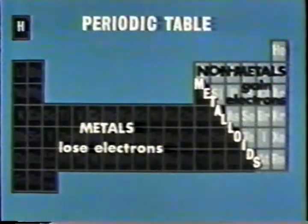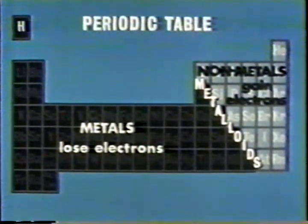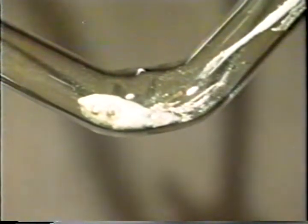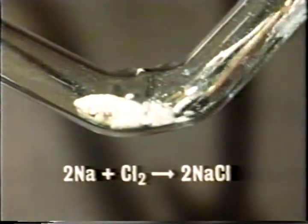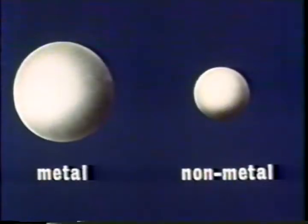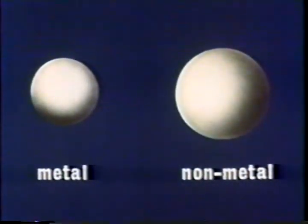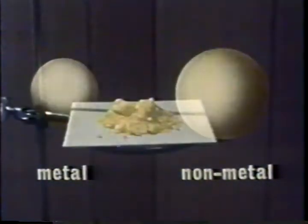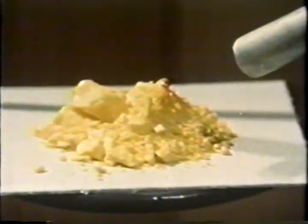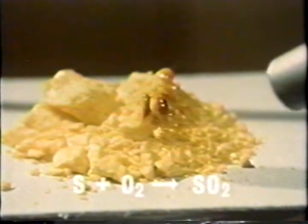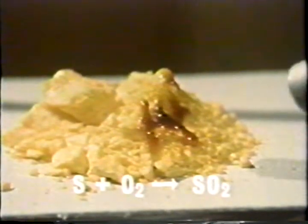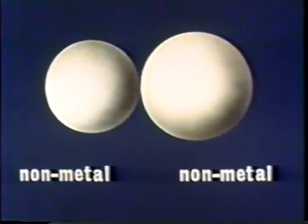El que los átomos de un elemento tiendan a perder o adquirir electrones no sólo afecta sus características físicas, sino también sus características químicas. Por ejemplo, el metal sodio se combinará violentamente con el cloro, un metaloide, y en la reacción se forma cloruro de sodio. En general, los metales reaccionan fácilmente con los metaloides porque los metales tienden a perder electrones y los metaloides a adquirirlos o a compartirlos, formando enlaces iónicos. Los electrones no se transfieren en reacciones entre metaloides: al quemarse el azufre se forma bióxido de azufre, un compuesto covalente, resultado de compartirse los electrones.